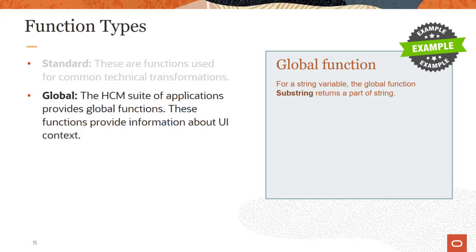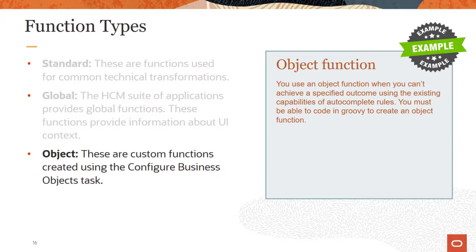Global functions are provided by the HCM suite of applications. These functions provide information about UI context. For example for a string variable the global function substring returns a part of a string passed to the function as a parameter. Object functions are custom functions created using the configure business objects task. For example you use an object function when you can't achieve a specified outcome using the existing capabilities of autocomplete rules.